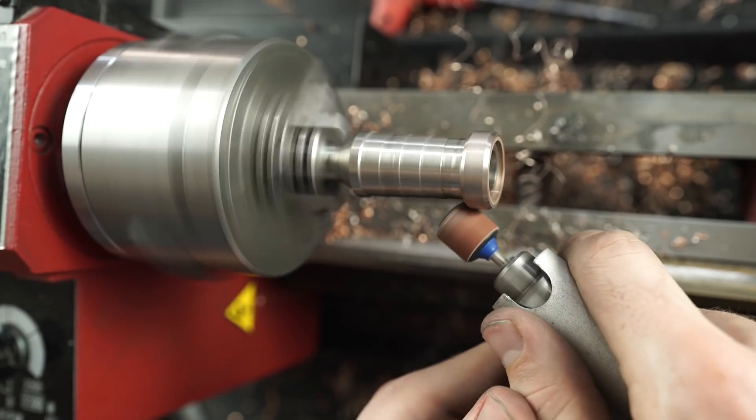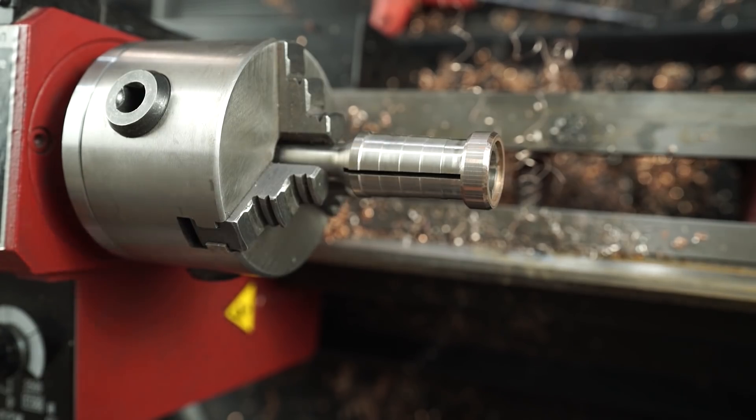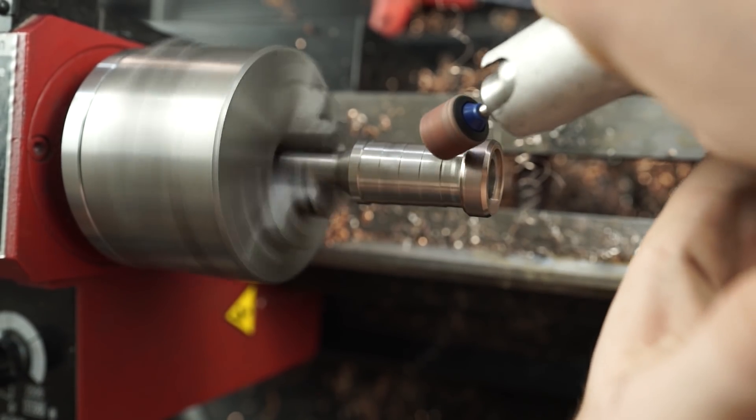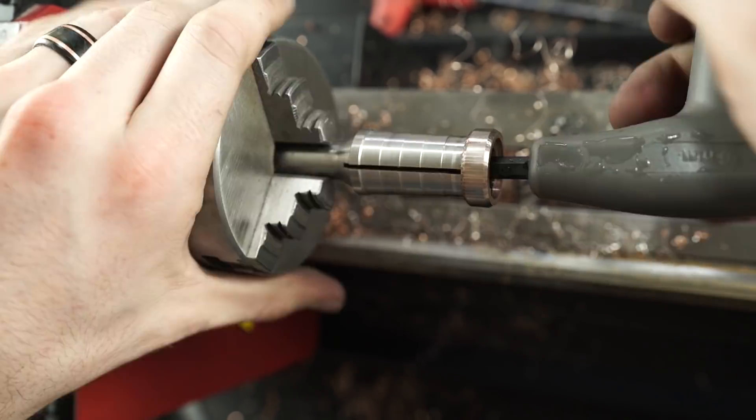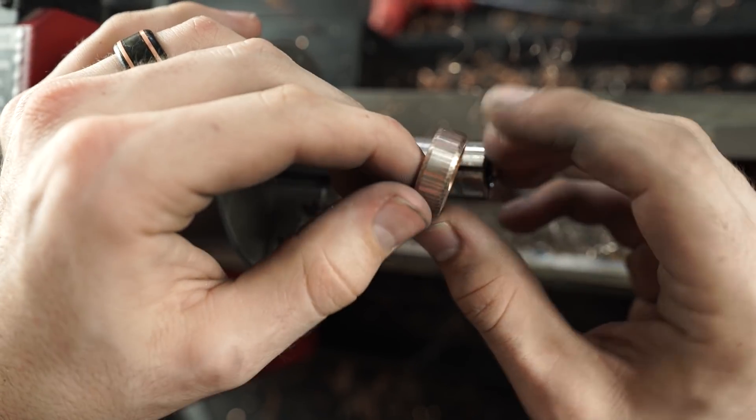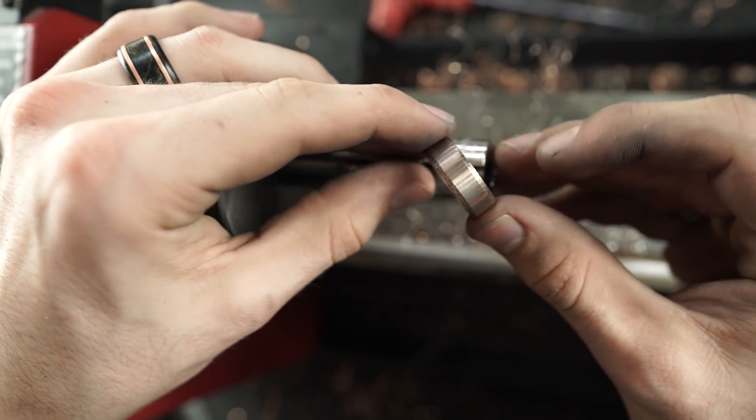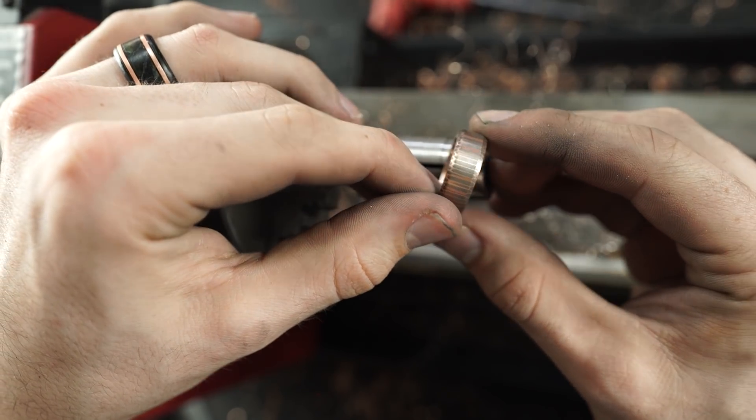And as you just saw I added bevels to the ring and to do that I just used the angled side of my lathe bit and I just carefully by hand put those bevels in. And I was just being very careful to make sure that both sides were even.